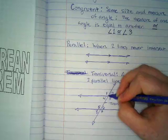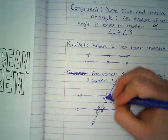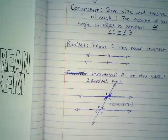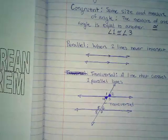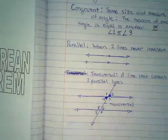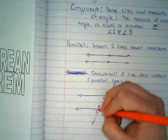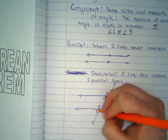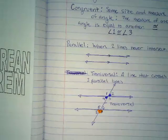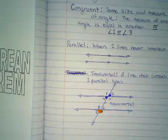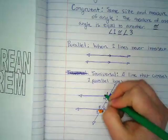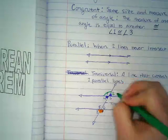You saw vertical angles, adjacent angles, and there is one other type of angle pair that we looked at, which was supplementary angles.